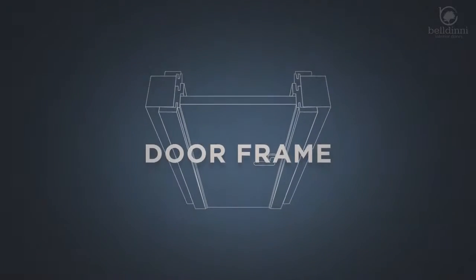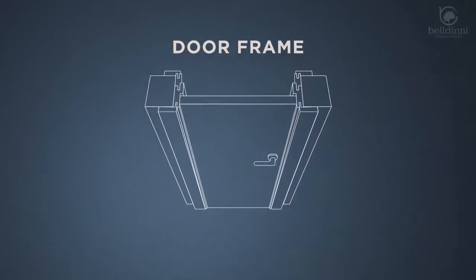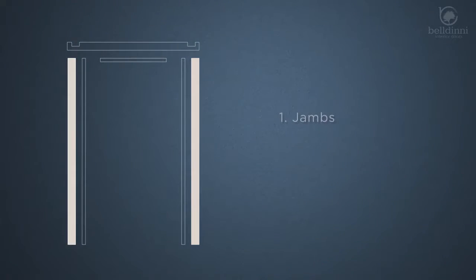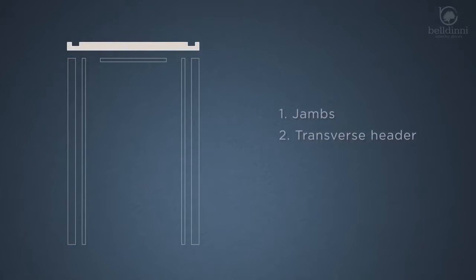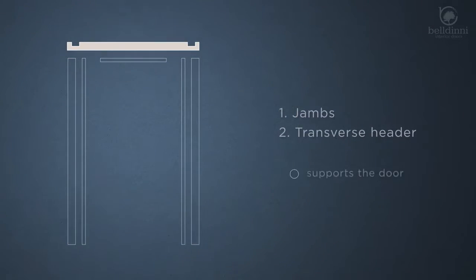Doorframe. A swing doorframe is the frame in a doorway into which a door is fitted. It consists of jambs, which are vertical portions of the frame, and a transverse header which encloses the sides and top of the doorway and usually supports the door.